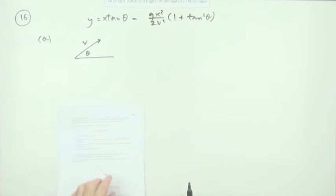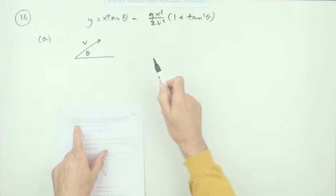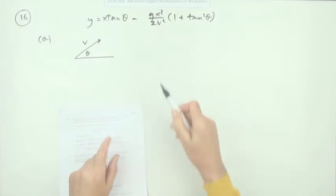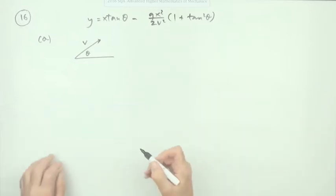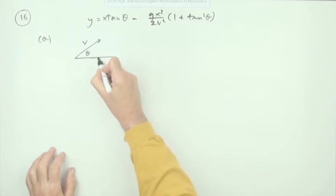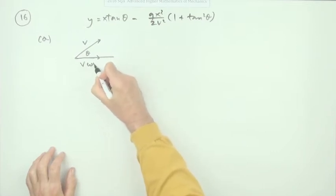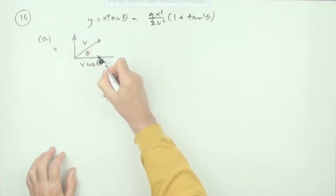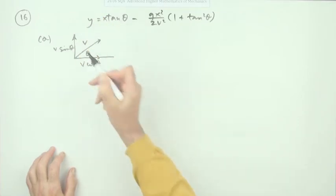It passes through a point x meters horizontally and y meters above. You want a coordinate equation. There's two components of velocity: along the way you've got V cos theta, up the way you've got V sine theta.